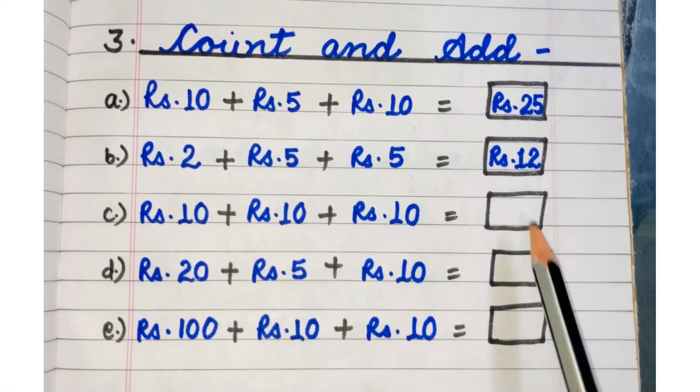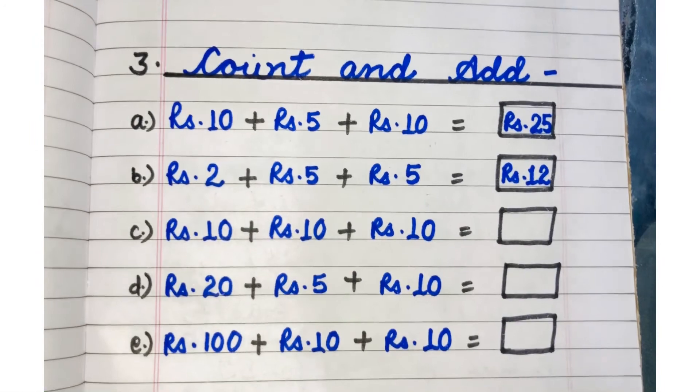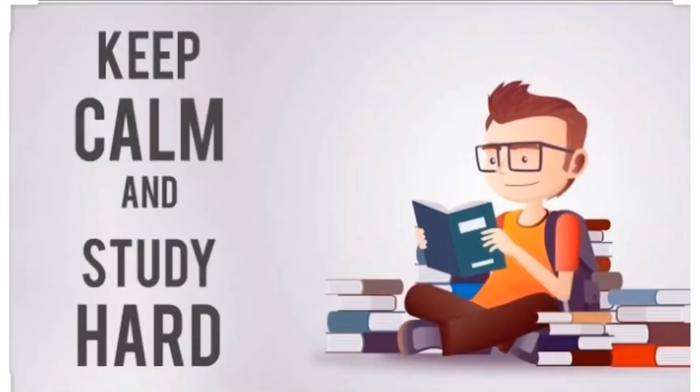Next, 3 rupees 10, Rupees 10 plus Rupees 10 will be 30. Same way, you just have to add. Nothing else. Do these 3 exercises beautifully in your maths notebook.